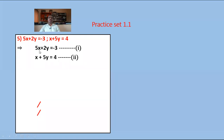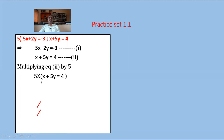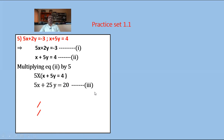Observe the coefficients of x and y in equations 1 and 2. To equate the coefficient of x, multiply equation 2 by 5. So 5 times (x plus 5y equals 4) gives 5x plus 25y equals 20 — equation number 3.